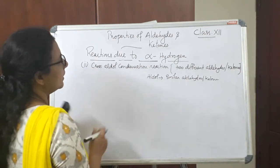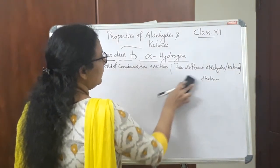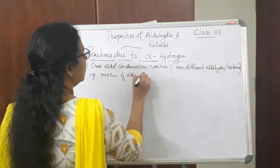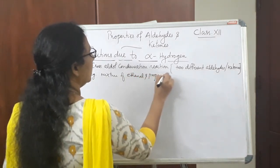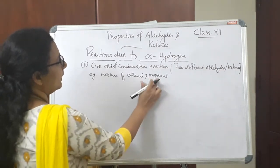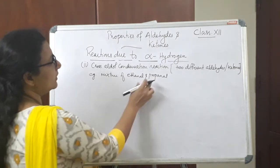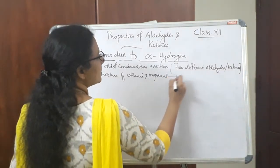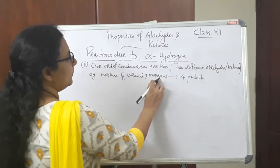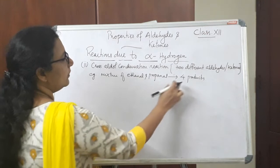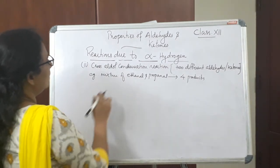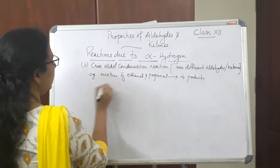Let us see an example. If we are taking a mixture of ethanal and propanal — these are two different aldehydes and they both have alpha hydrogen atoms. In this case, we can expect four products from the cross aldol condensation reaction. We will see how this reaction takes place.